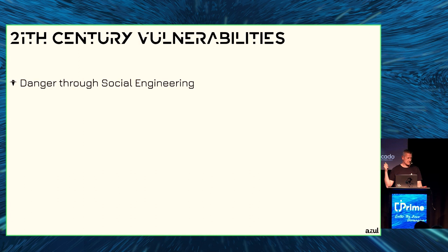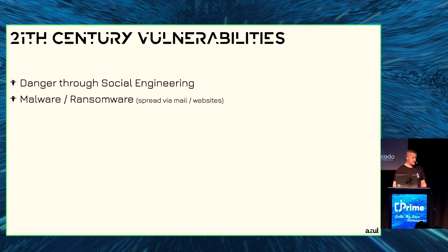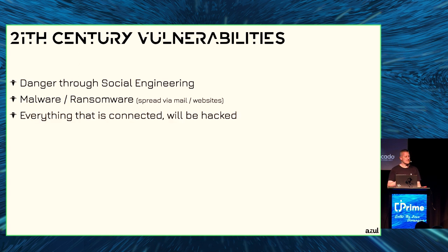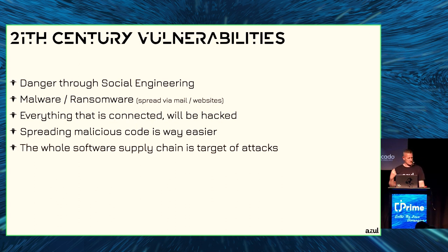The vulnerabilities also changed dramatically. These days a really big danger is social engineering — look it up if you don't know what it is. Who's using social networks? You guys should look it up. We have malware and ransomware everywhere. You get a short message on your phone, click a link, and suddenly something goes wrong. Everything that is connected will be hacked — that's a fact. Spreading malicious code is easier than ever before, and the whole software supply chain is a target of attacks.